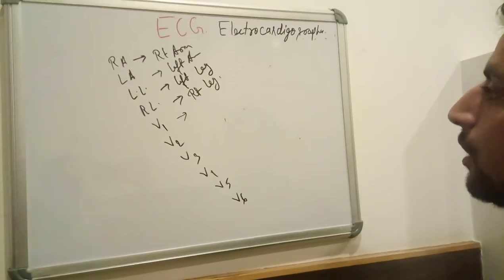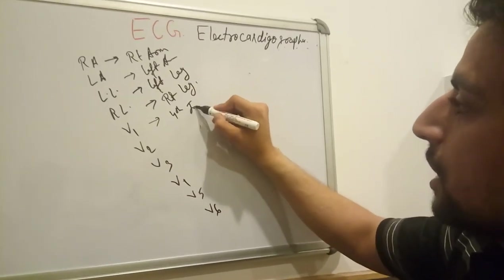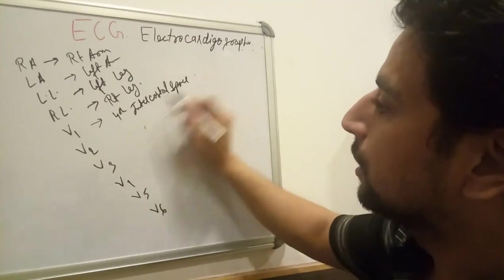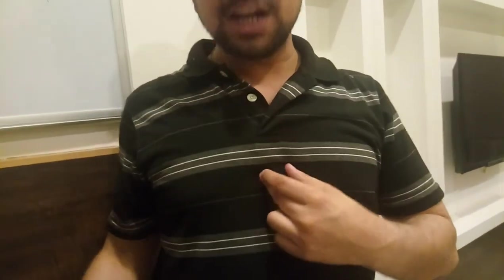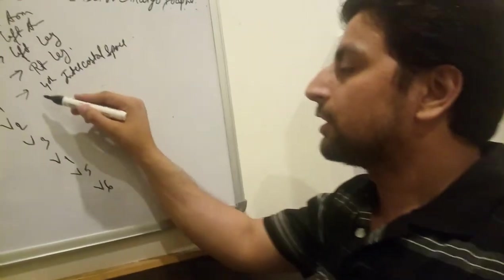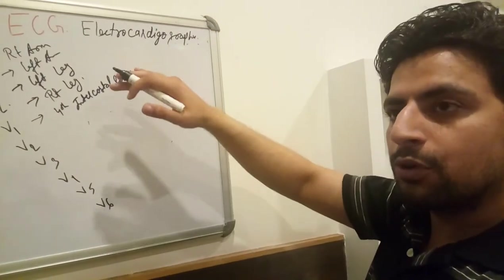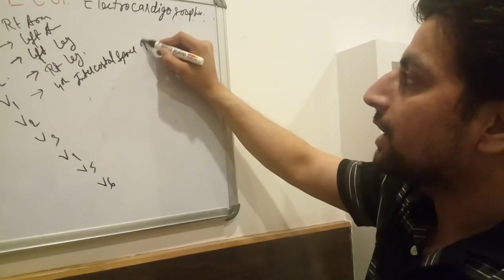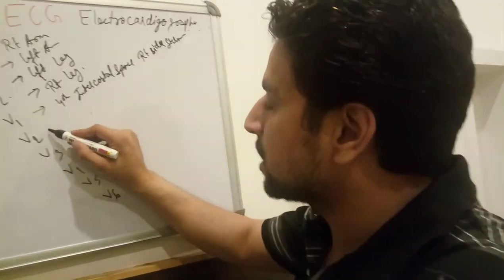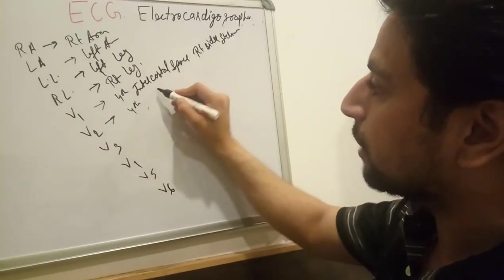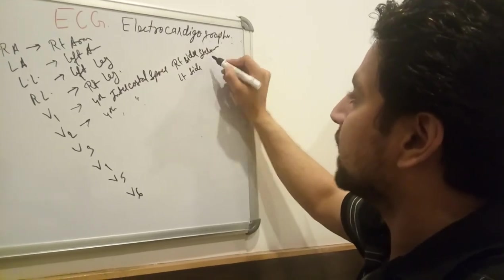V1 is placed on the fourth intercostal space — the space between the ribs — on the right side of the sternum, between rib number 4 and rib number 5. V2 is also on the fourth intercostal space but on the left side of the sternum.